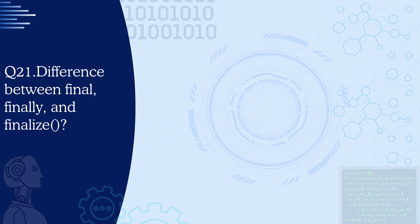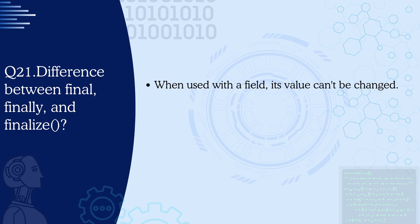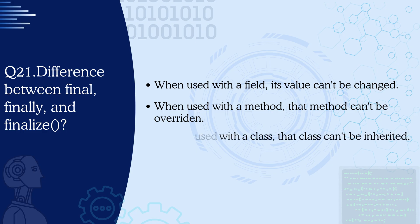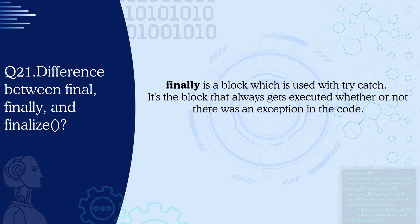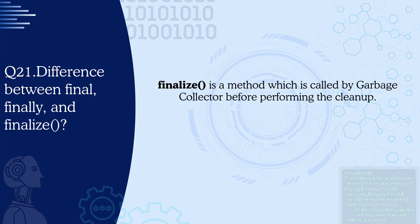Question 21: What is the difference between final, finally, and finalize? Final is a keyword used with fields, methods, or classes. When used with a field, the value can't be changed. When used with a method, the method can't be overridden. When used with a class, the class can't be inherited. Finally is a block used with try-catch that always gets executed whether or not there was an exception. Finalize is a method called by the garbage collector just before performing the cleanup.